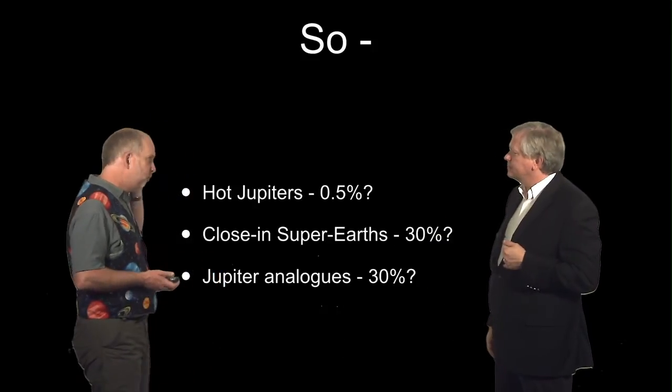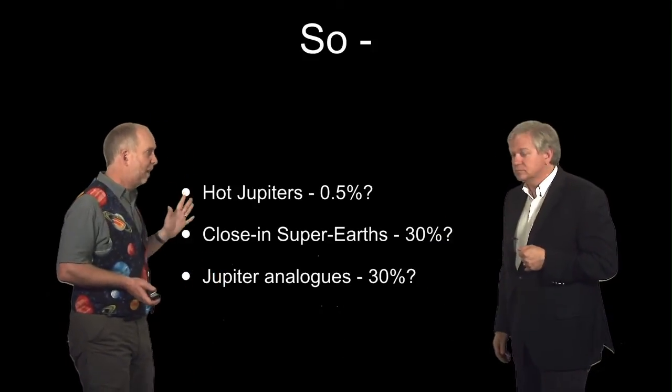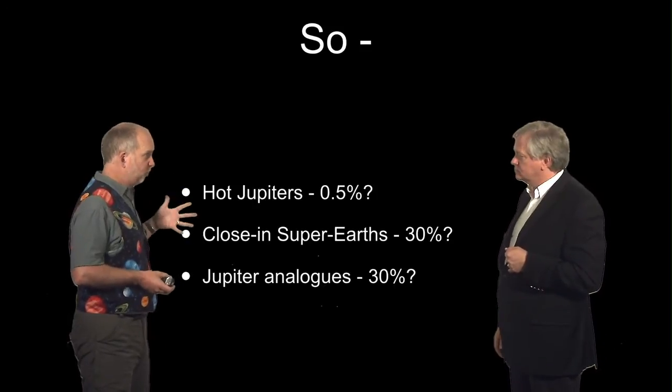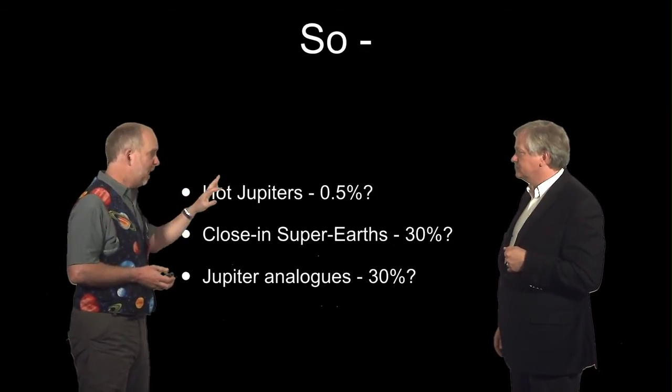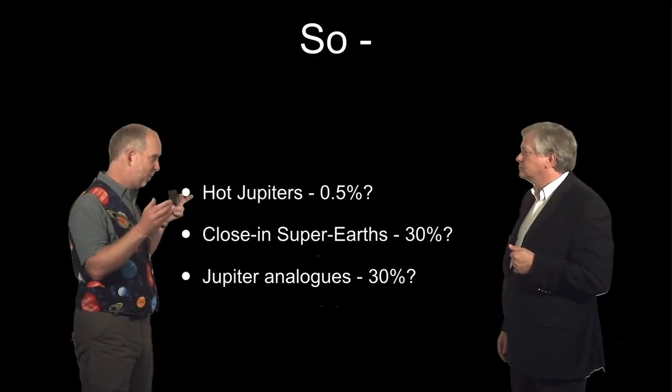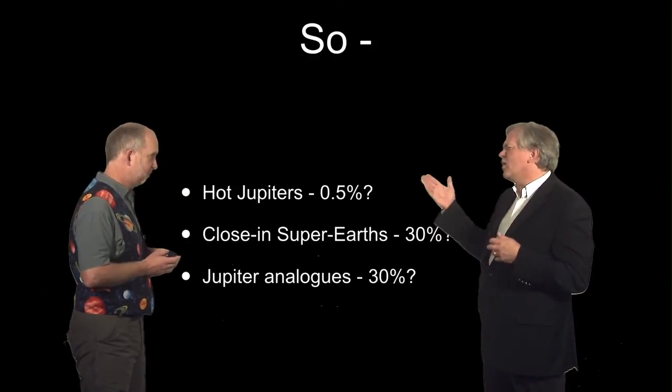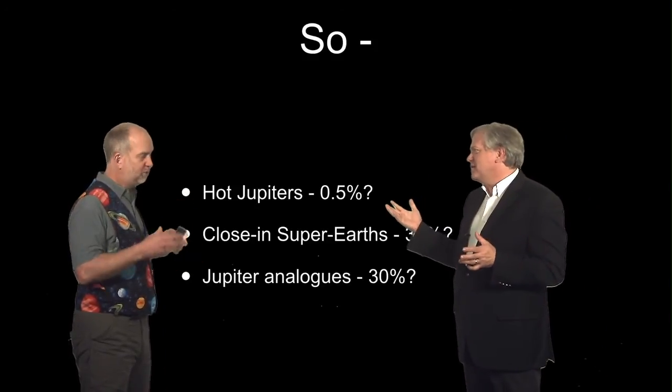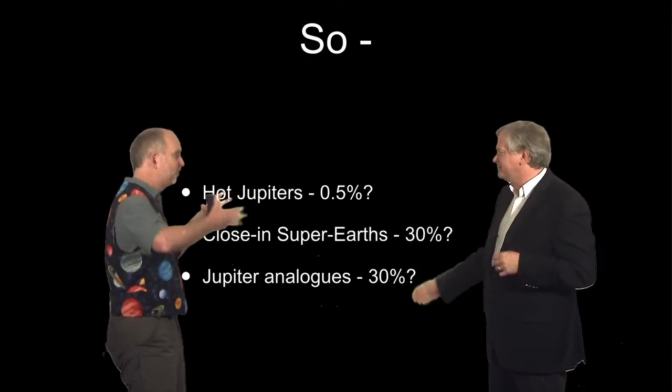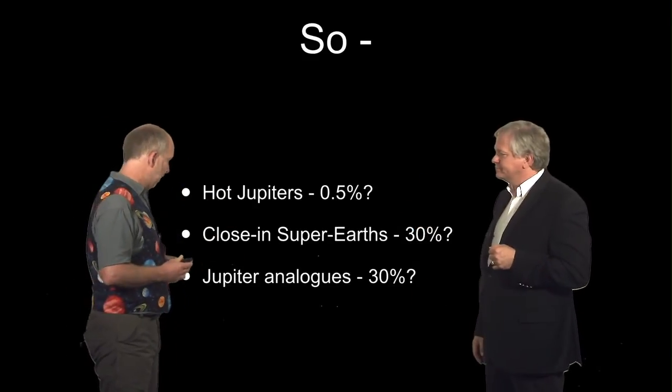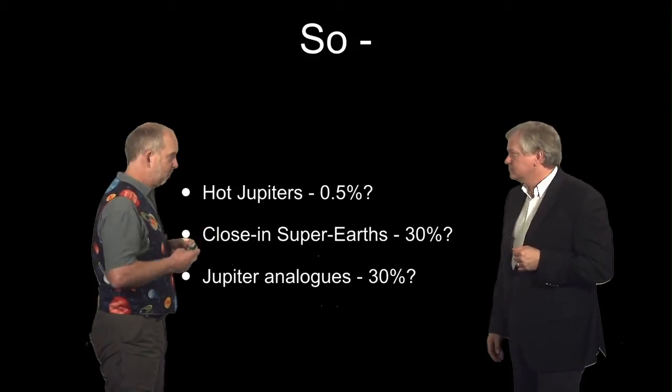So if we try and work out the overall exoplanet population, this is very rubbery. We've got the classic hot Jupiters, the ones that were discovered first. And they're maybe half a percent, one percent depending quite where you draw the boundaries around them. So they really are an aberration. Yeah, they were seen first because they're easy, because they're so big and so close in. But they're not a large fraction. The eccentric giants are about 7%.